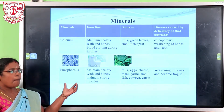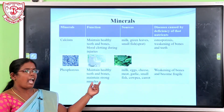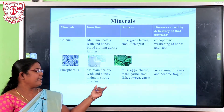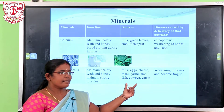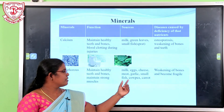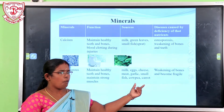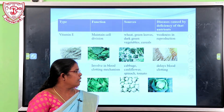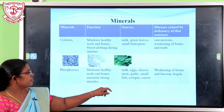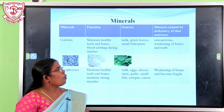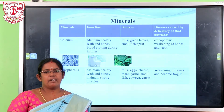Another mineral is phosphorus. Phosphorus maintains healthy teeth and bones and maintains strong muscles. Sources of phosphorus include melon, eggs, seeds, meat, garlic, small fish, cowpeas, and carrot. Deficiency of phosphorus causes weakening of bones and they become fragile.